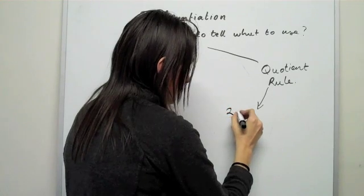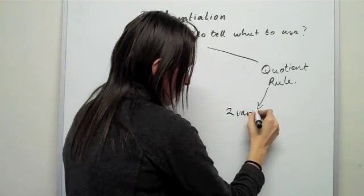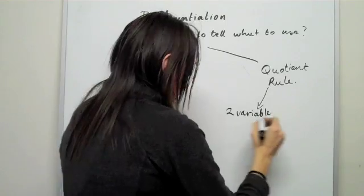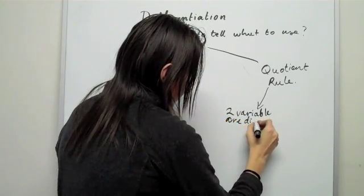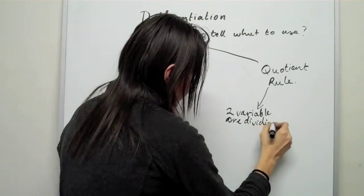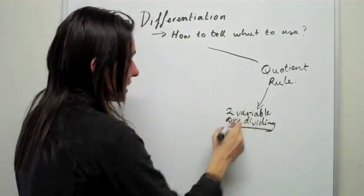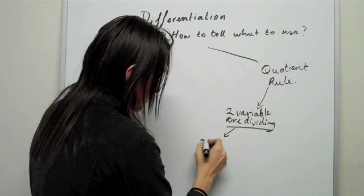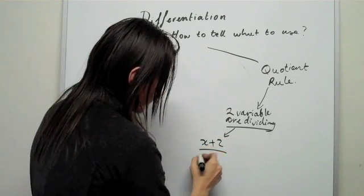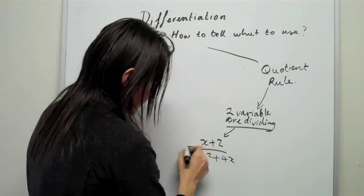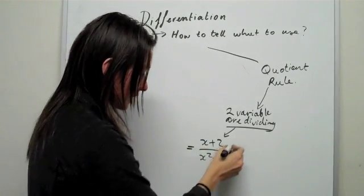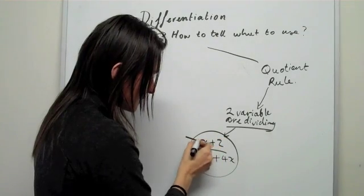You'll find that you need to have, for example, x over (x + 2) or something like that to use the quotient rule, because one of these variables is dividing by the other.